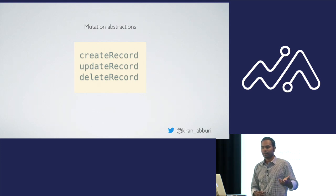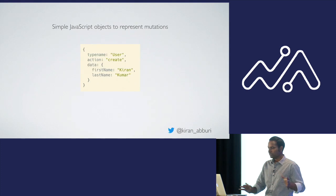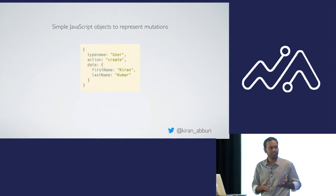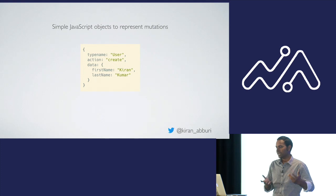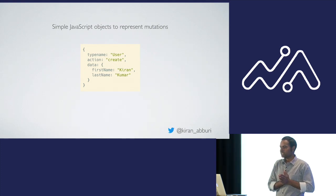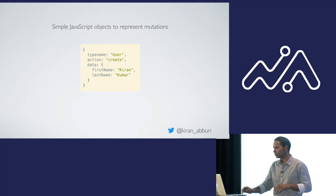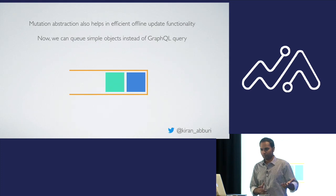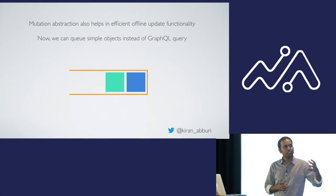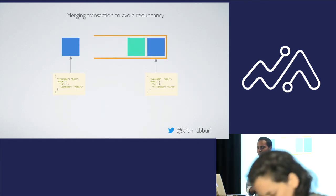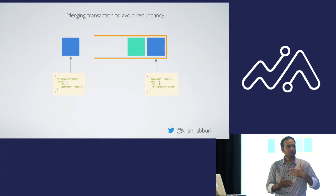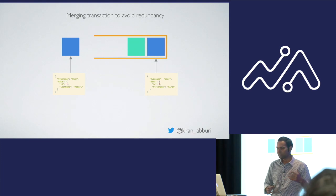We also have abstractions like updateRecord and deleteRecord for updating and deletion. The key advantage is that mutations are now represented as plain JavaScript objects — for example, an object representing 'create user' with first name and last name. This reduces boilerplate and simplifies offline implementation: when the user is offline, we can easily queue these JavaScript objects, and when back online, play them back to execute the mutations. We can also merge similar mutations for further optimization.